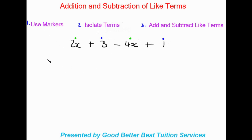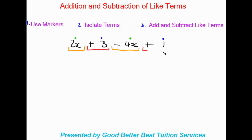The next step says to isolate the terms. Basically, isolating the terms involves including the sign so you don't forget about it when adding and subtracting like terms. We have 2x as a whole term, and then 4x — but there is a sign in front, so this whole term is a negative 4x. We're not going to forget about that subtraction. And then this is plus 3 — a positive 3 — and this is a positive 1. So we've used the markers, we've isolated the terms, and now we can add and subtract the like terms.